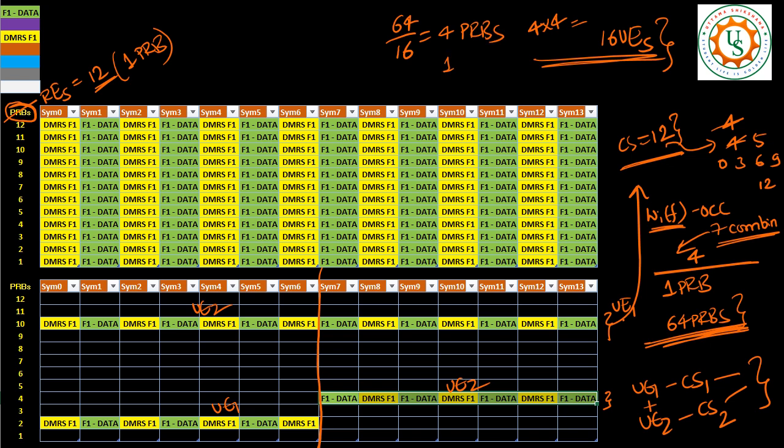By that way, you will have lots of PRBs available for the PUSCH. And you can improve the PUSCH throughput in the uplink direction.